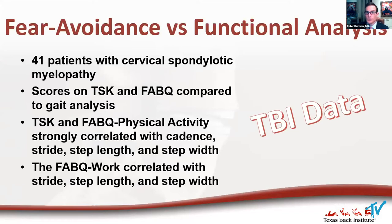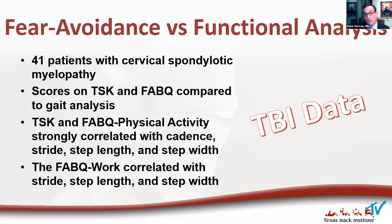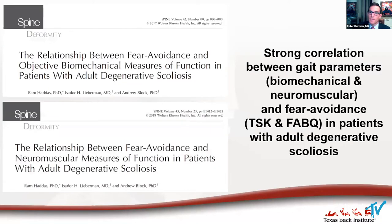That brings us to the psychosocial aspect of pain and function. At TBI we're fortunate to have Dr. Block, a psychologist who does a lot of publications with us. We've been comparing psychological patient-reported outcome measures with our functional analyses, and what we found is that there are some correlations — fear avoidance correlates strongly with gait parameters in various patients, including scoliosis patients and cervical myelopathy patients.